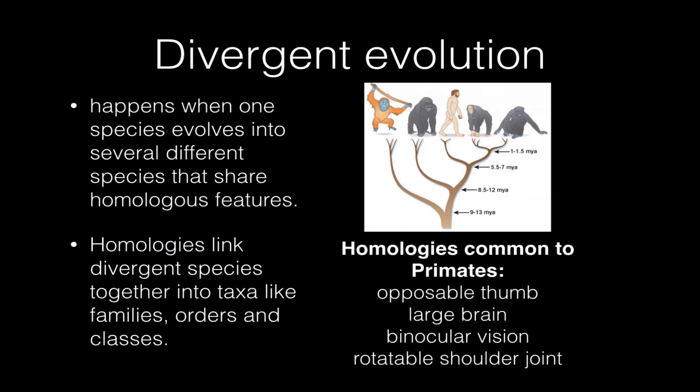So homologies that we can use to compare all these primates are things that you only find in the mammals that fall into the taxon that we call primates. Things like opposable thumbs, a large brain compared to body size, two eyes on the front of the skull which gives us binocular vision, and a shoulder joint that allows us to rotate our arm completely around 360 degrees, like in the motion a pitcher might make to throw a baseball. This is something that most mammals cannot do, especially things like dogs and cats. So these homologies link us to other primates, and the fact that we have hair links us to other mammals, and the fact that we have forelimbs links us to other vertebrates. So you see how homologies work.